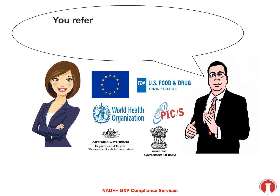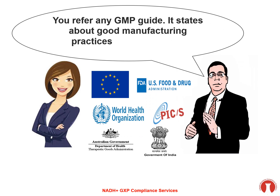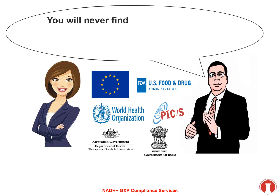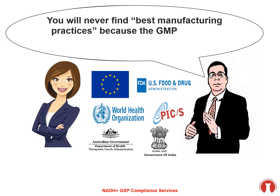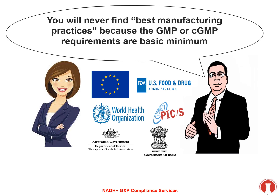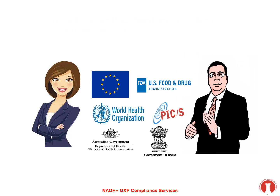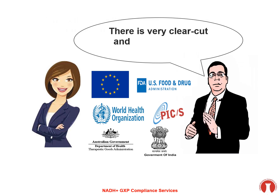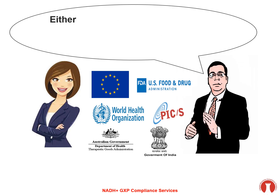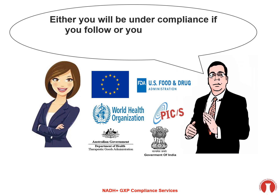If you refer to any GMP guide, it states Good Manufacturing Practices or Current Good Manufacturing Practices — you will never find Best Manufacturing Practices. Because GMP or cGMP regulations are basic minimum regulations we need to follow. There is a very clear-cut black-and-white message: either you will be under compliance if you follow them, or under non-compliance if you do not.